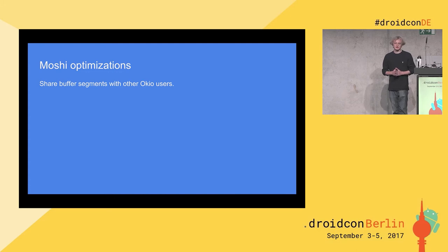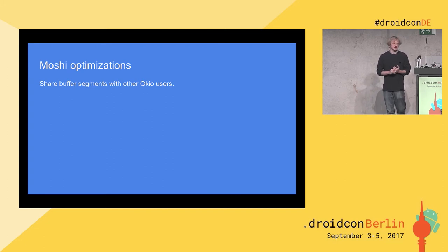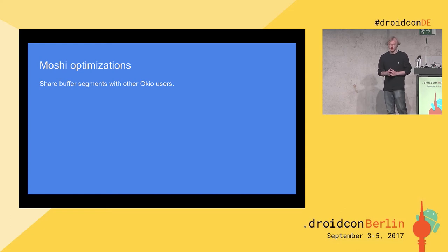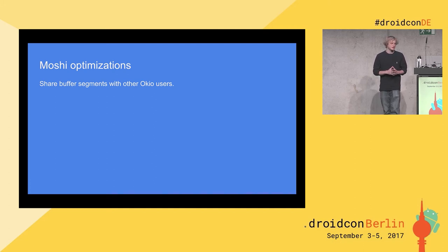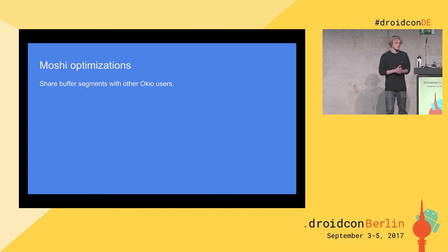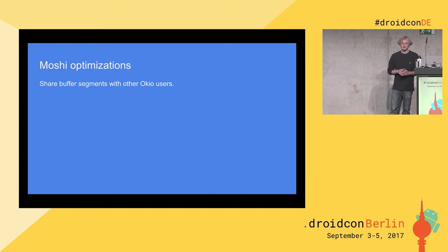The first big thing in Moshi's optimization is saving buffer segments, and it works well with other OKIO users. So if you're using OkHttp and Retrofit, this is really handy because you don't have to have multiple references to the same data — OKIO internally will just share these buffer segments across users of OKIO statically.